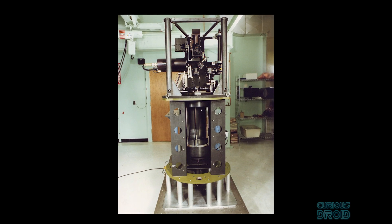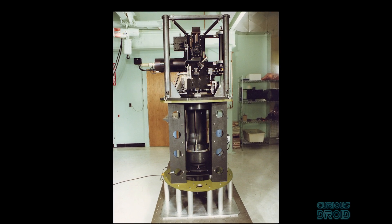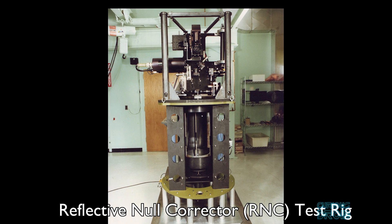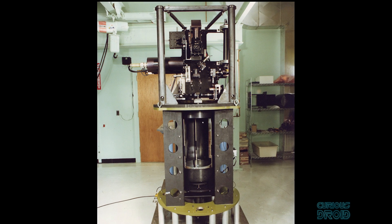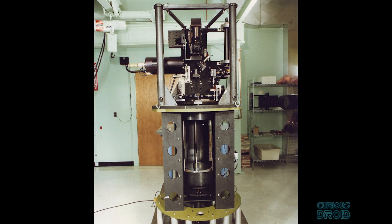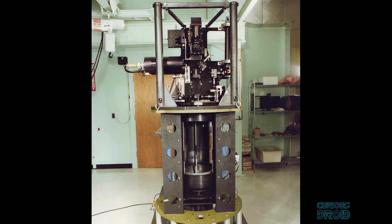Perkin Elmer even designed their own high specification reflective null corrector, or RNC, to test the exact standard of one micrometer (one thousandth of a millimeter) as required for the space telescope.